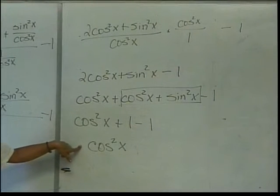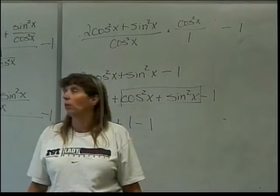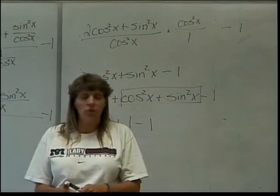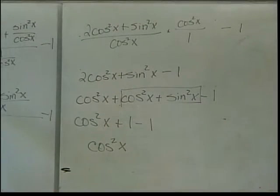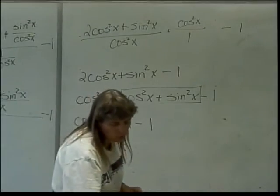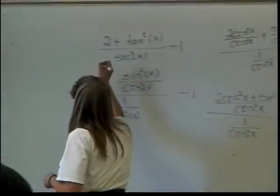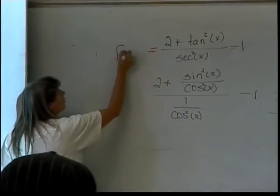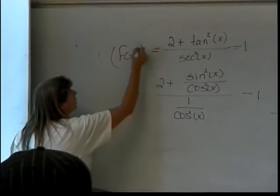That's the way most of your trig identities will work. Now, how would this look in Webwork? Well, in Webwork, the chances are it would have had a sign that looks like this and then it would have said this equals f of x squared.